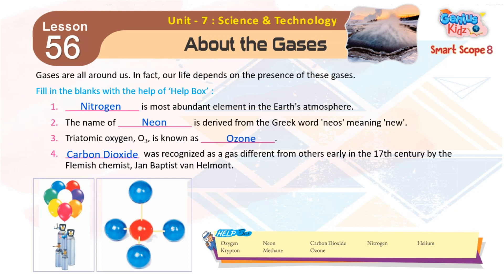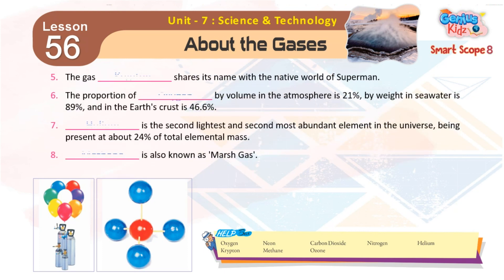3. Triatomic Oxygen O3 is known as ozone. 4. Carbon Dioxide was recognized as a gas different from others early in the 17th century by the Flemish chemist Jan Baptist Van Helmont.